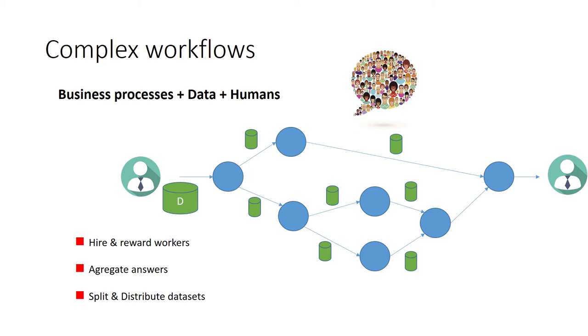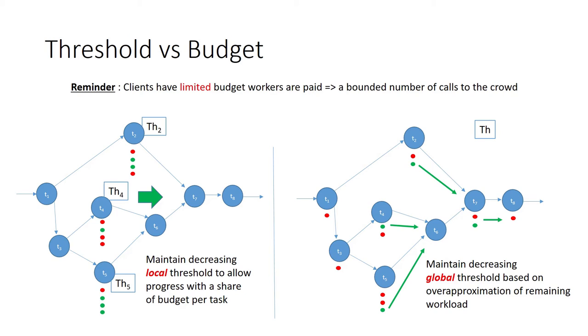As each contribution is paid, the trust that one can afford depends on the remaining budget available. There are several ways to transfer data and control the quality of answers forged by crowd workers.